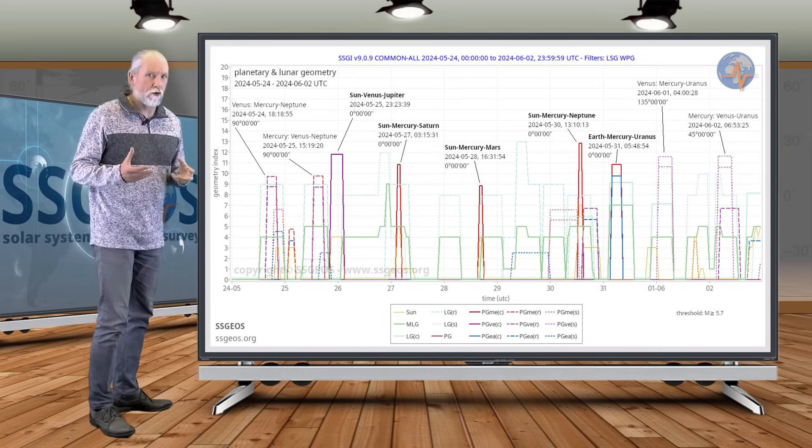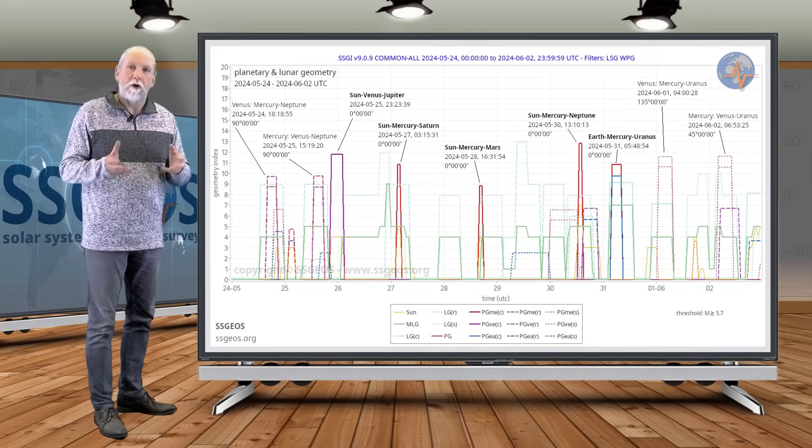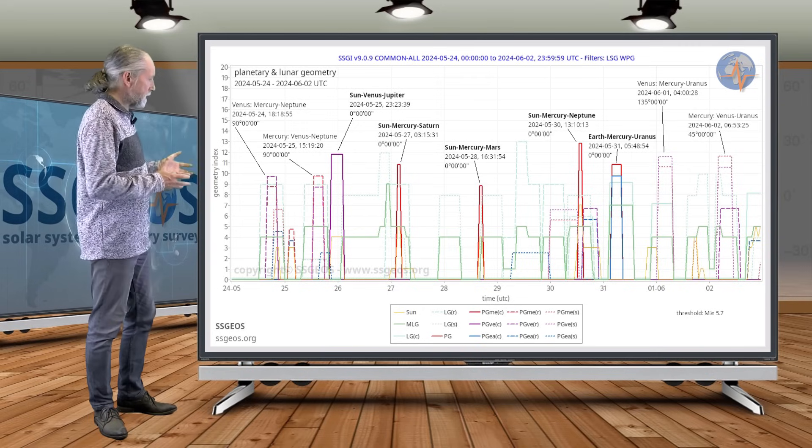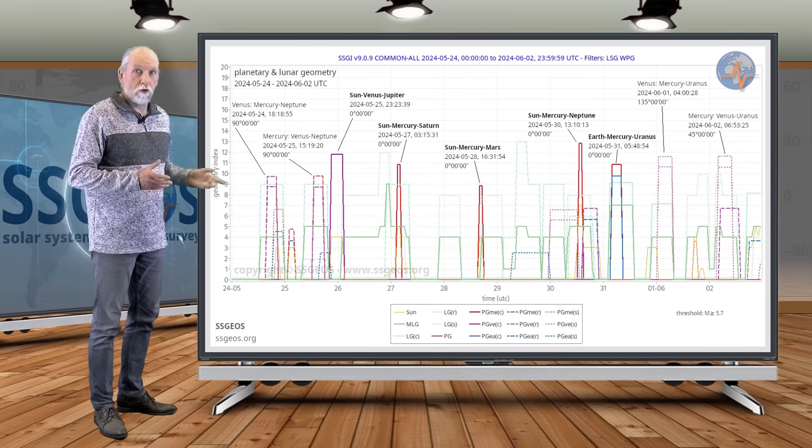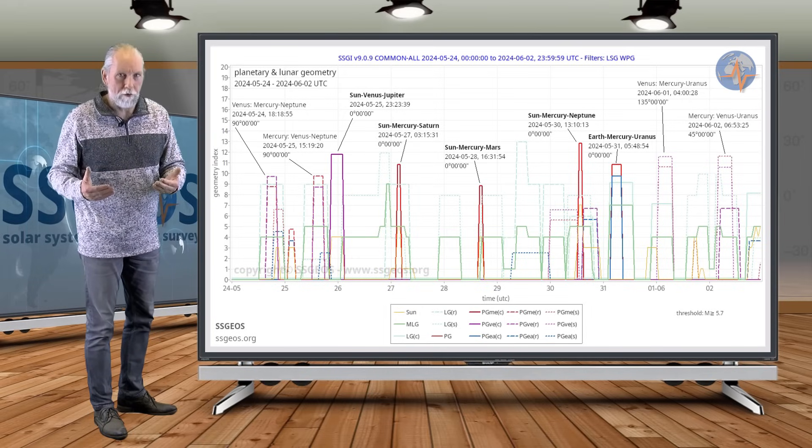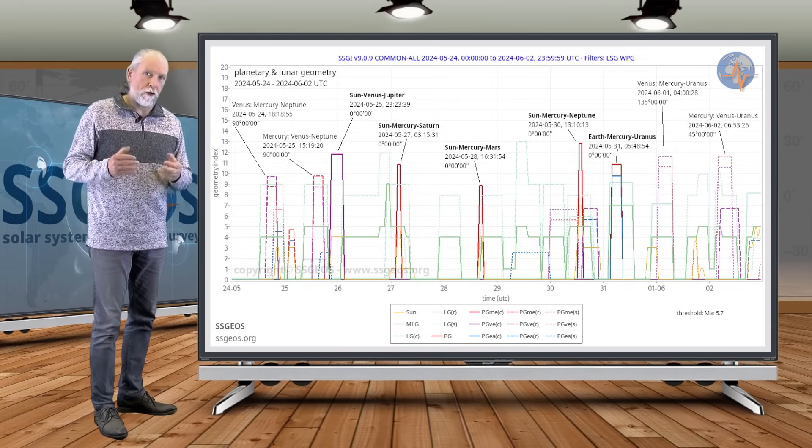Now this right angle geometry would be very critical if it were with Uranus. This time it will be with Neptune. It could also be critical, but probably not as critical as it would have been with Uranus.